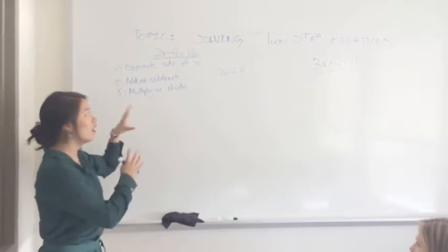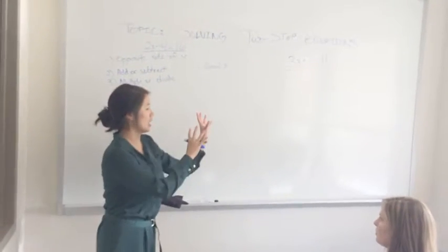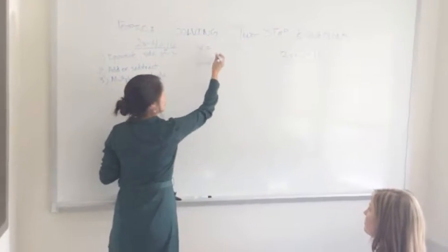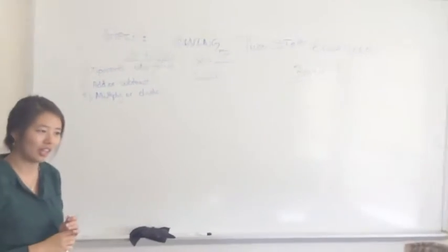And the way we solve for it is by getting all of the numbers to the opposite side of the equation. Because what we want to end up with is x equals some number. I'm just going to put a question mark because we don't know what it is right now.